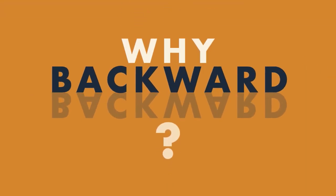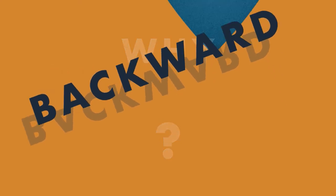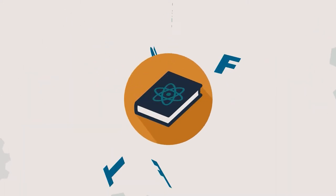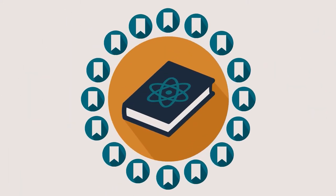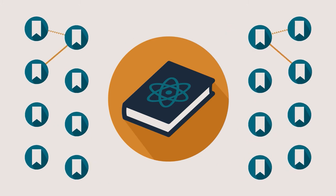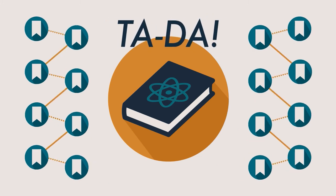But what makes it backward? Where you start is what makes it backward. The common approach when designing a college course is to start with the stuff. You grab a textbook, and if you're lucky, it's broken into 16 chapters, and you can just cover a chapter a week for the semester and call it done. Ta-da! Instant course!